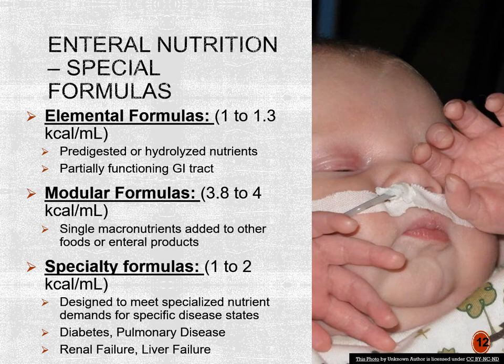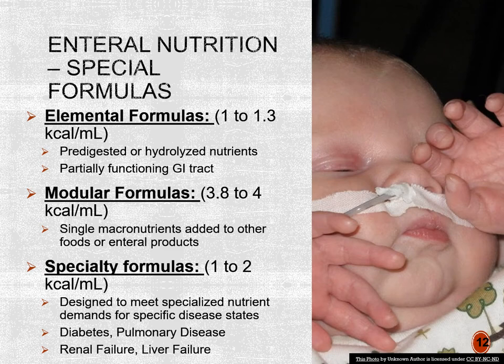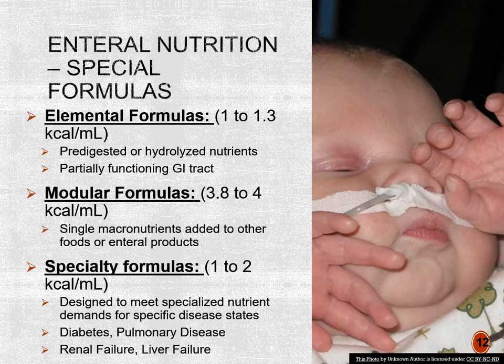We also have specialized formulas designed to meet the needs of patients with specific diseases. For example, Glucerna is used for patients with diabetes because it contains a low-carb formula. For patients with chronic renal disease, Nepro made by Abbott is typically high-calorie, high-protein, fluid-restricted, low-phosphorus, and low-potassium. For COVID patients in the ICU who are intubated and on enteral tube feedings, we typically use a pulmonary formula to help decrease the respiratory quotient (RQ).